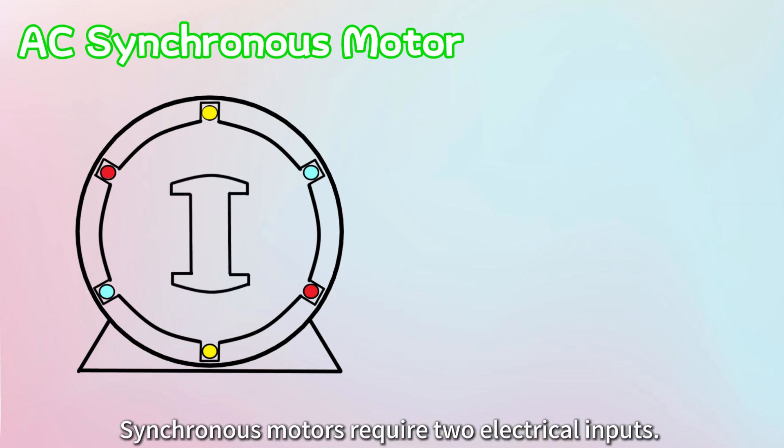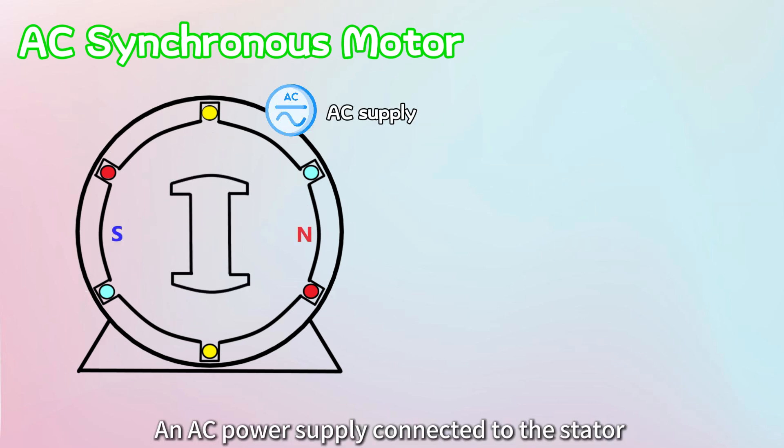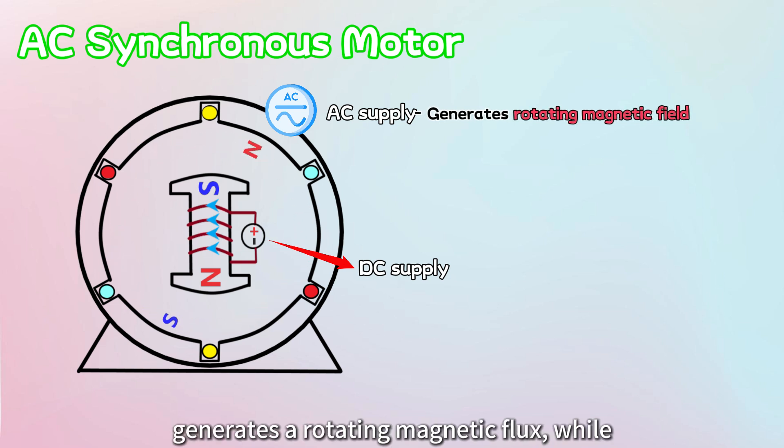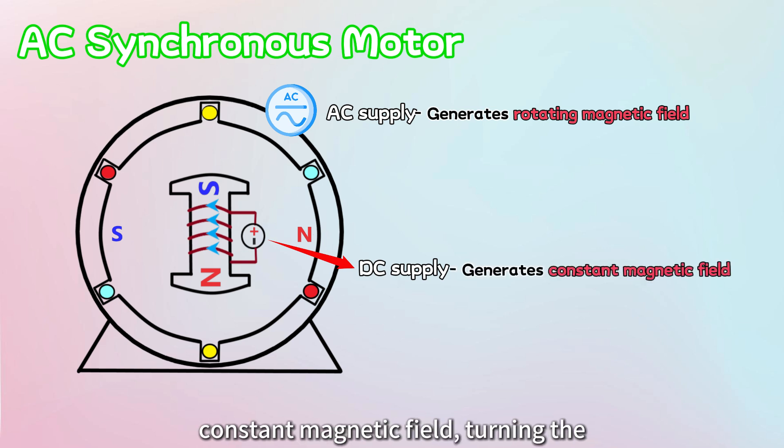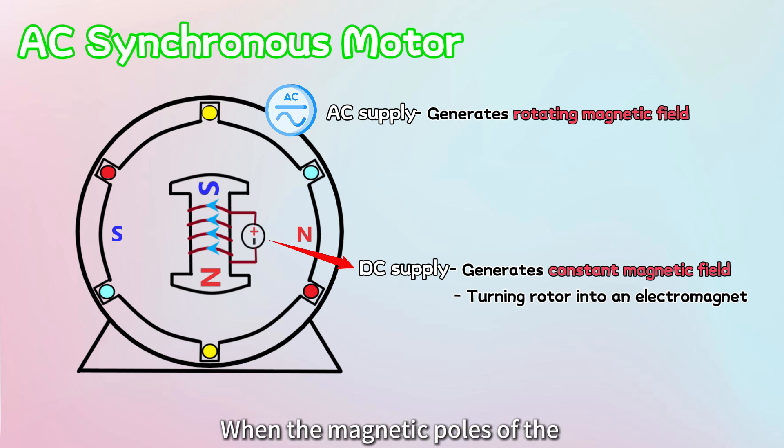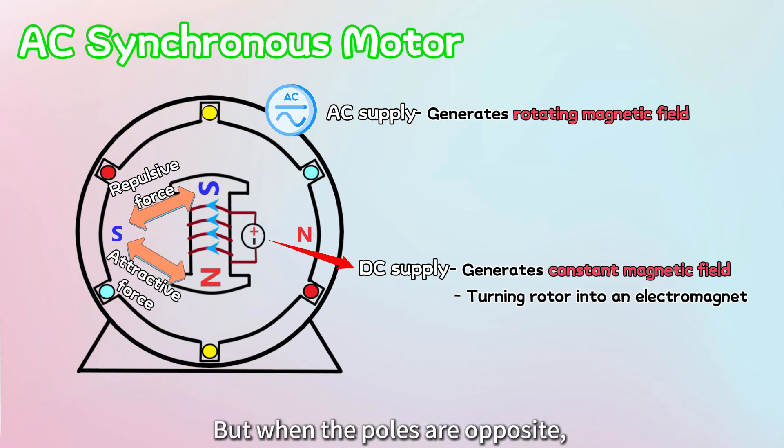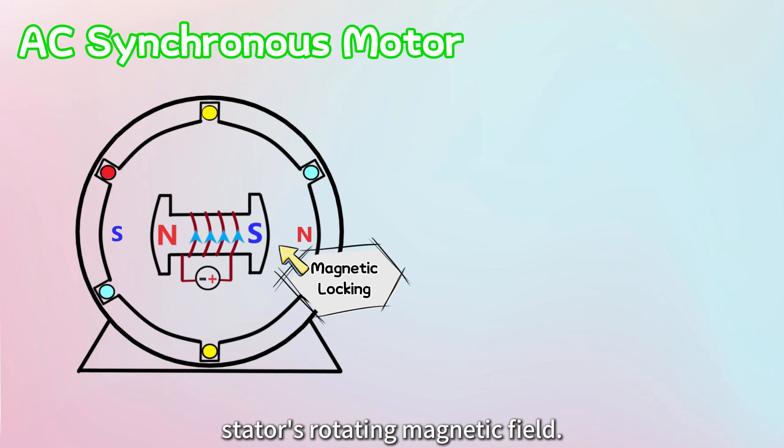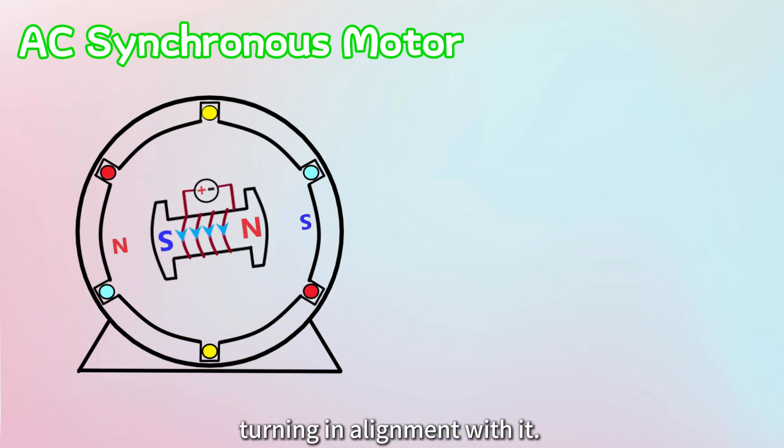Synchronous motors require two electrical inputs, an AC power supply connected to the stator and a DC supply connected to the rotor. The AC supply to the stator generates a rotating magnetic flux, while the DC supply to the rotor generates a constant magnetic field, turning the rotor into an electromagnet. When the magnetic poles of the stator and rotor are the same, the rotor experiences a repulsive force, but when the poles are opposite, the rotor feels an attractive force. This push-pull interaction causes the rotor to lock onto the stator's rotating magnetic field, turning into alignment with it.